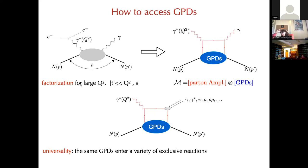In addition, with GPDs we have the unique possibility to access the form factors of the energy-momentum tensor, called gravitational form factors, which allow us to describe some mechanical properties of the nucleon. The golden channel to access the GPD is deeply virtual Compton scattering (DVCS), where we have the scattering of the electron off the proton. In the one-photon exchange approximation, a virtual photon is exchanged and becomes a real photon in the final state.